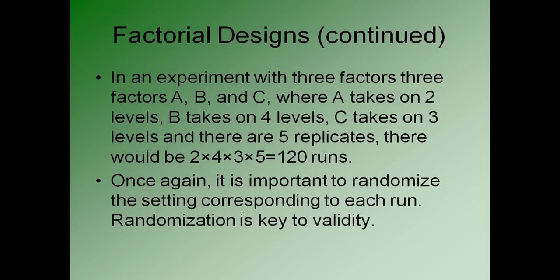In another experiment, for example, we might have three factors, A, B, and C, and in this case, we're going to allow the factors to take on different numbers of levels. For example, A may take on two levels, B may take on four levels, C may take on three levels, and let's suppose there are going to be five replicates. Then the number of distinct experimental combinations is going to be 2 times 4 times 3: 2 for the levels of the first factor, 4 for the four levels of the second, and 3 for the three levels of the third. And then we need to multiply that by five replicates for each of the distinct experimental combinations, and that gives 120 runs.